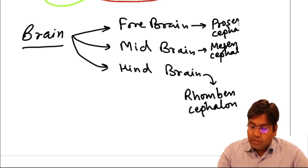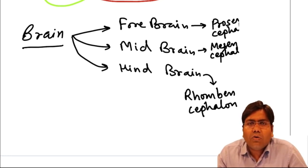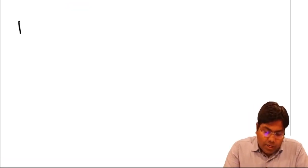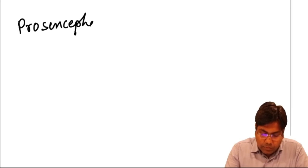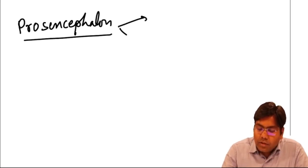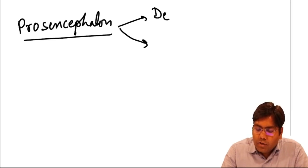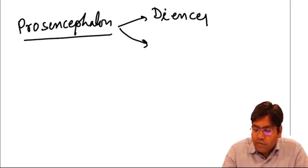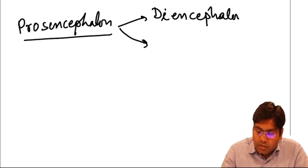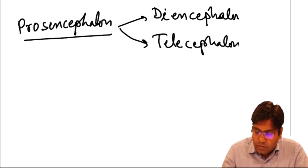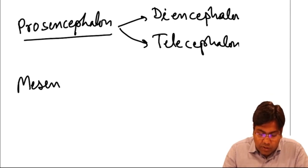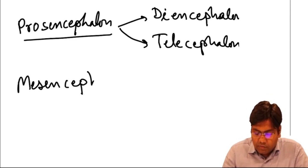My dear friends, you must remember the names — the nomenclatures are really important when we talk about understanding the body. Prosencephalon is further divided into diencephalon and telencephalon. Midbrain, or mesencephalon, is not divided into anything else, so you can directly call it mesencephalon.